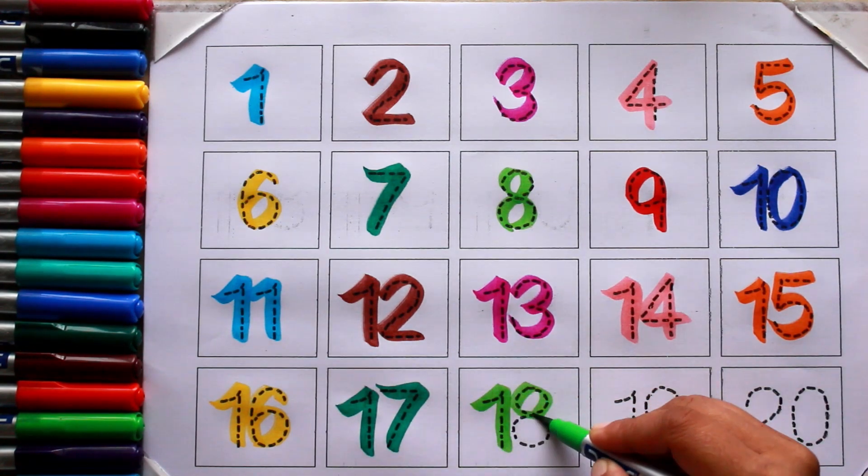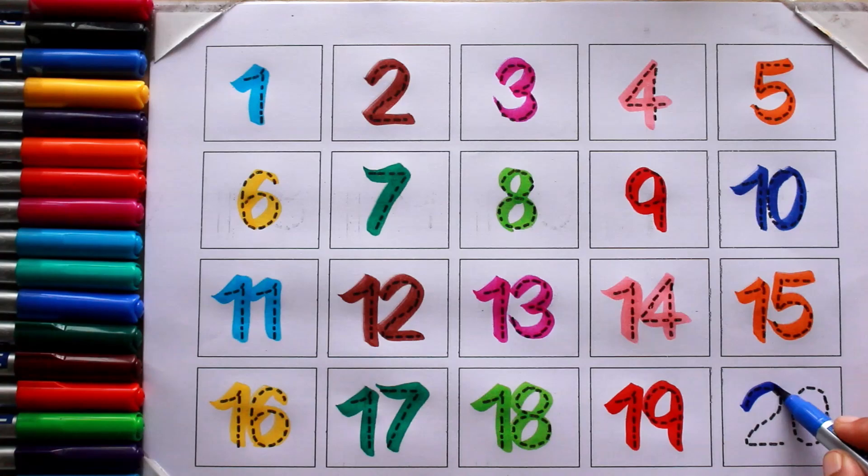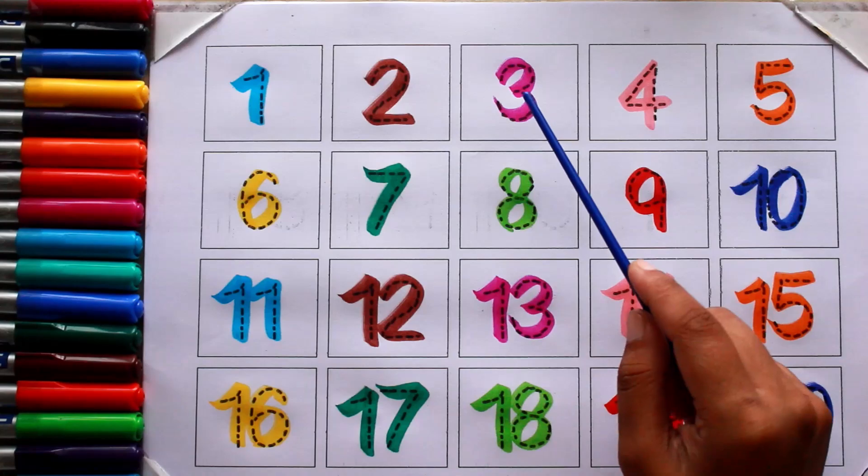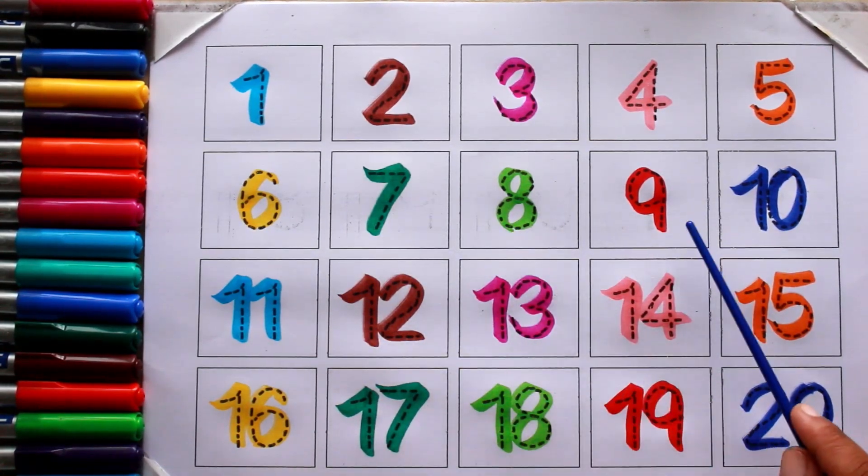Red color nineteen, blue color twenty. Let's count again: one, two, three, four, five, six, seven, eight, nine.